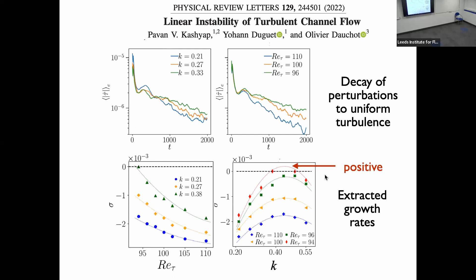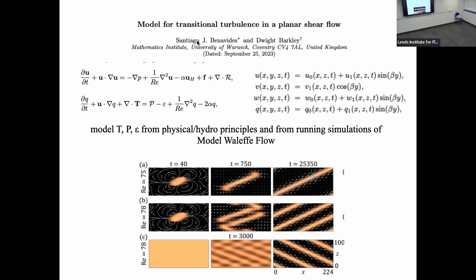The very last thing I'll mention is recent work submitted by Benavides and Barkley — an extension of Barkley's pipe flow model to two spatial dimensions, using model Waleffe flow. It includes a turbulence field with its own evolution equation where production and dissipation terms are taken from physics and from integrating the model Waleffe flow. And that's the end. Thank you very much.